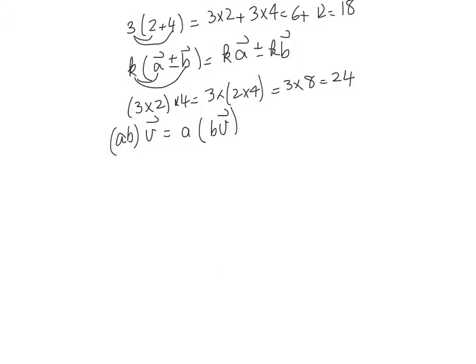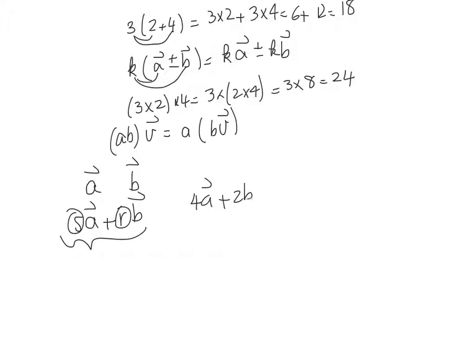Now we are going to define the linear combination of vectors. Let's assume that you have two vectors, a and b. If I can write a relationship like s times a plus r times b, where s and r are two real numbers, then we call s·a plus r·b a linear combination of vectors a and b. For instance, 4a plus 2b is called a linear combination of vectors a and b. Or, negative 3a plus 0.75b — again, this is another linear combination of two vectors a and b.